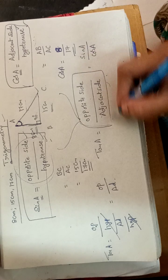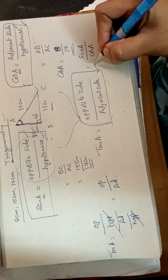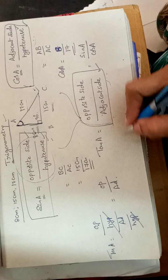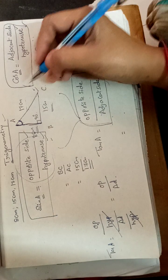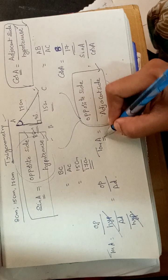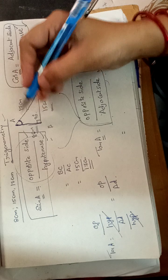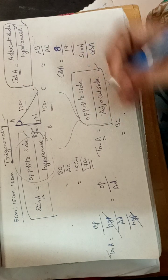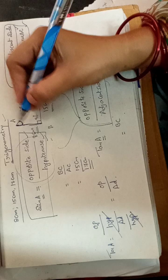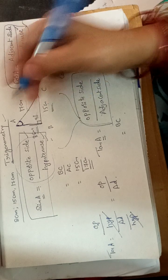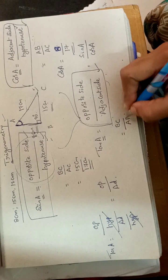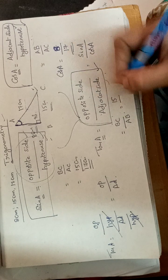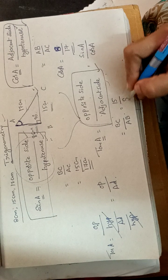From the picture, we can write tan A as the opposite side for angle A, which is BC, divided by the adjacent side for angle A, which is AB. BC's length is 15 cm and AB's length is 8 cm. So tan A equals 15 over 8.